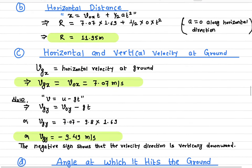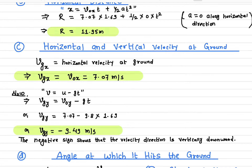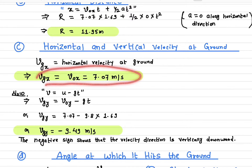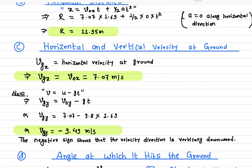Now let's find the velocity when the projectile hits the ground. The horizontal velocity will remain exactly the same throughout the flight — 7.07 m/s — because there is no force and therefore no acceleration along the x-direction.